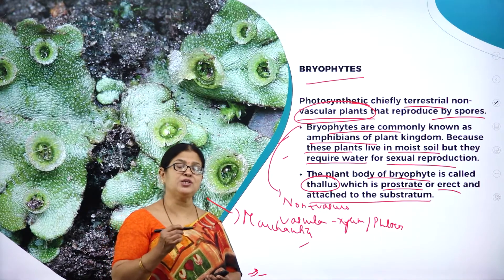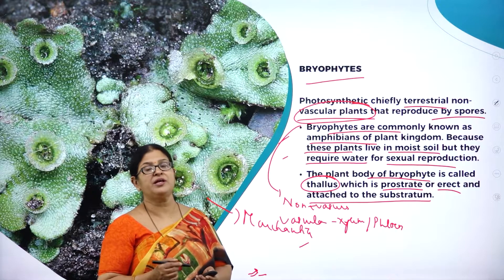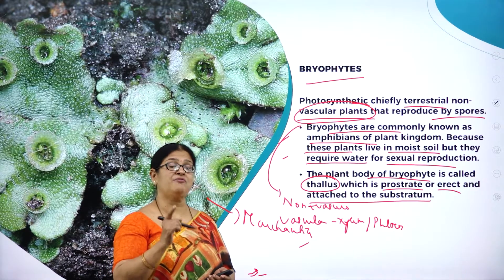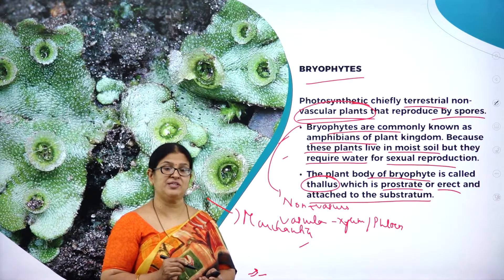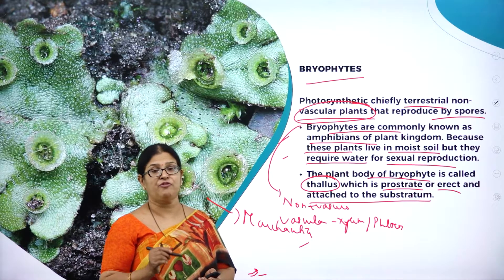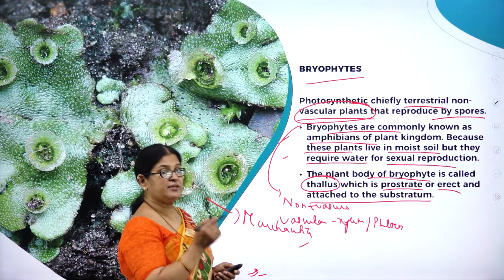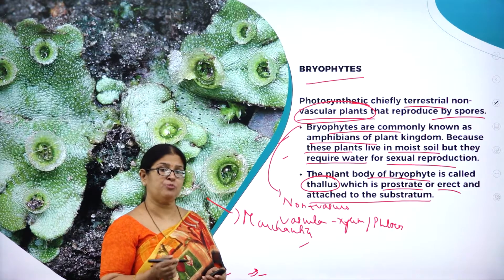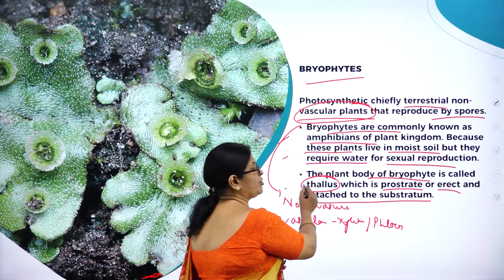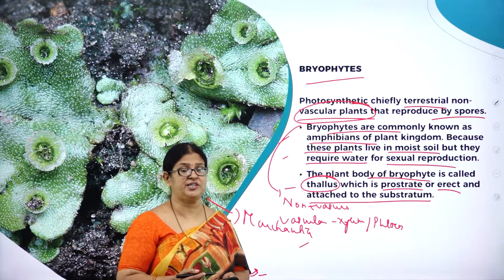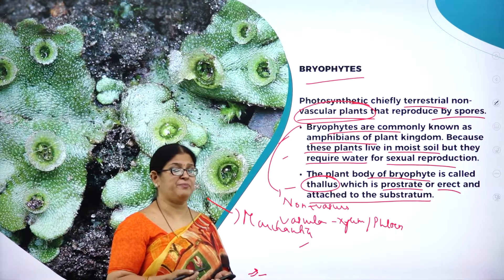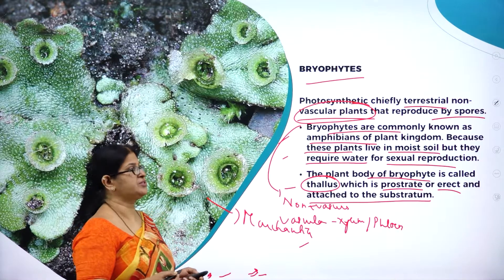Bryophytes are the second group of plants in the plant kingdom, commonly referred to as the amphibians of the plant kingdom. They are photosynthetic, chiefly terrestrial, found on moist soil, and are non-vascular plants due to the absence of xylem and phloem. They are called amphibians because they require water for sexual reproduction. They have root-like structures called rhizoids.